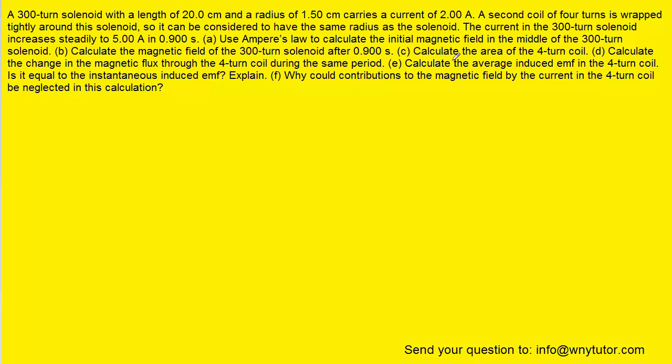For part C, to calculate the area of the 4-turn coil, we simply have to use the formula for the area of a circle, which of course is pi r squared. The radius of that solenoid was given to be 1.5 centimeters. The question noted that that second coil can be considered to have the same radius as the solenoid. Since the solenoid had a radius of 1.5 centimeters, we can use that in calculating the area of this second coil.